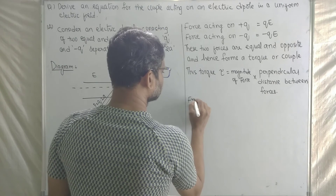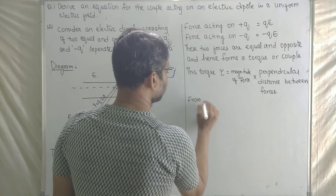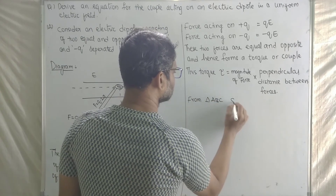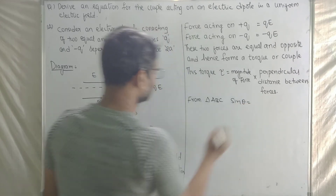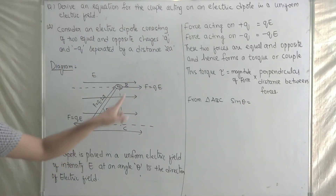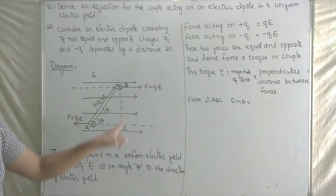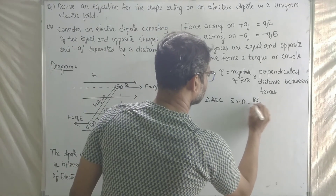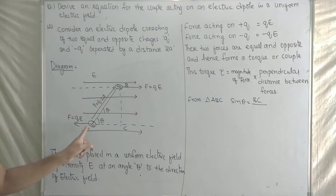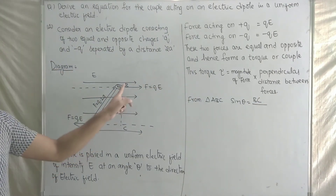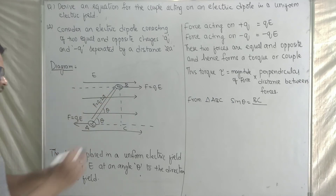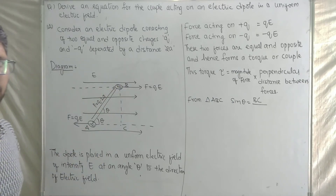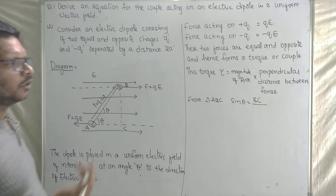From triangle ABC, sin theta is equal to the opposite side BC divided by the hypotenuse AB. The hypotenuse AB equals 2a. Therefore BC equals 2a sin theta.